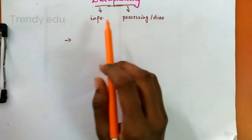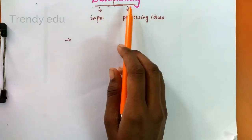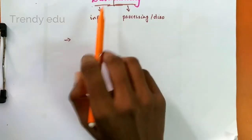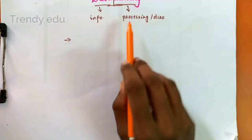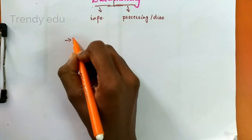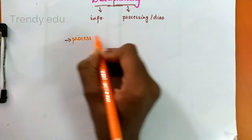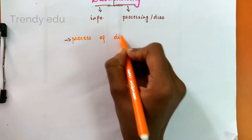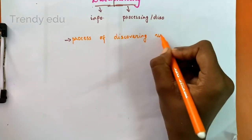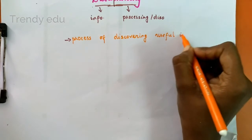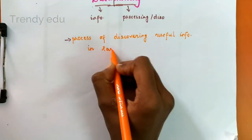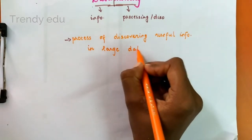So what is the definition of data mining? Data is nothing but the information and mining is nothing but processing or discovering. So data mining is the process of discovering useful information from a large data repository.